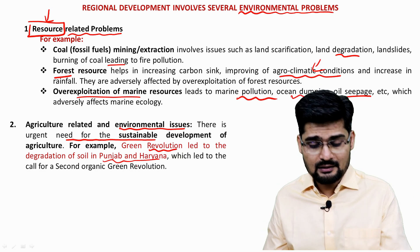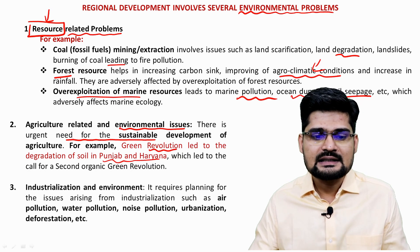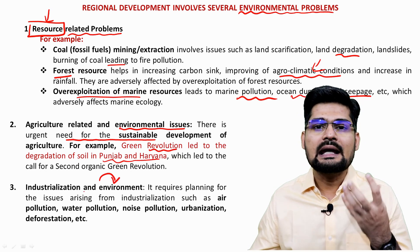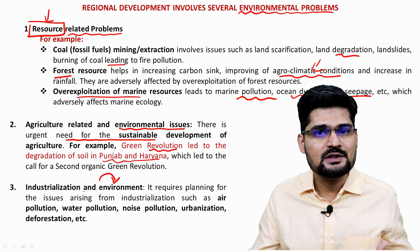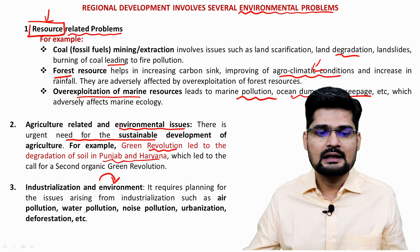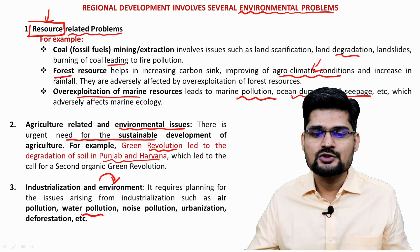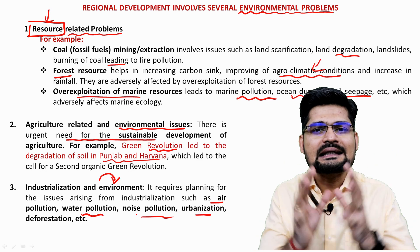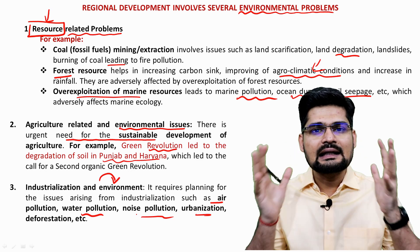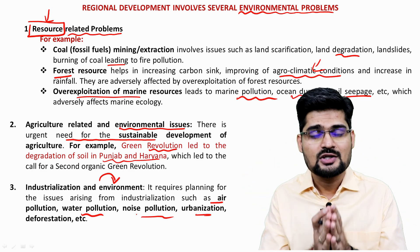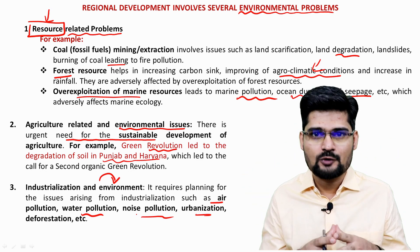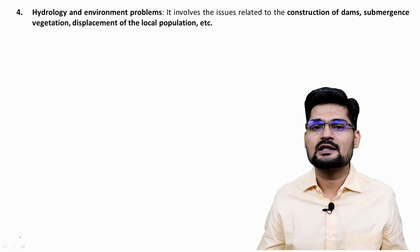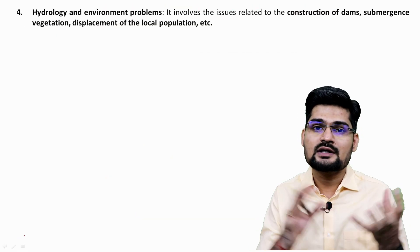Industrialization and environment is the third important problematic pillar. Any industry has a carbon footprint, as discussed earlier. Water pollution, air pollution, noise pollution, urbanization, and deforestation are directly or indirectly linked to industrialization. Hydrology — the water regime involving both fresh water and marine water — represents the fourth important area of environmental problems.